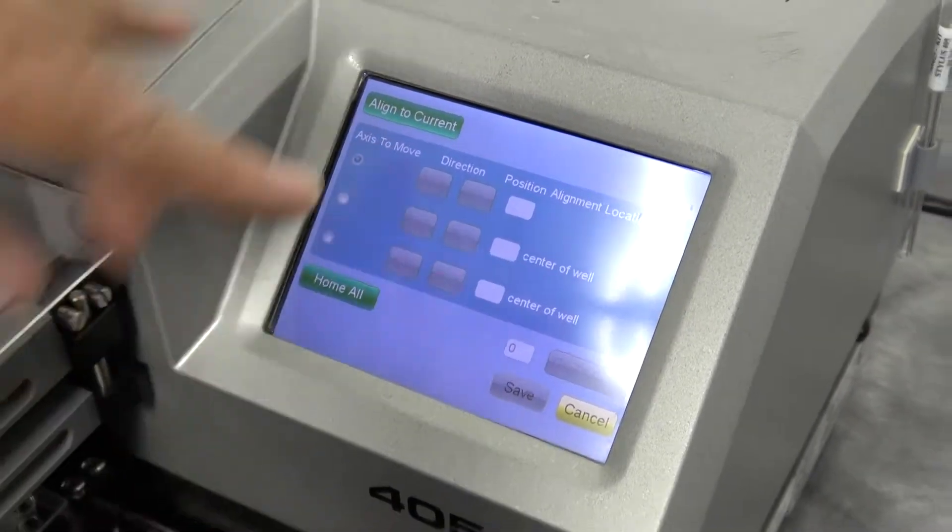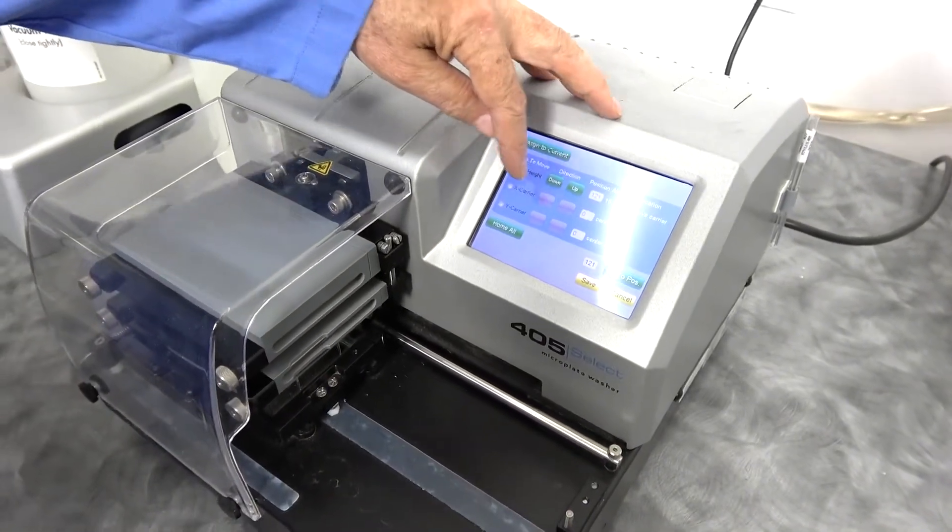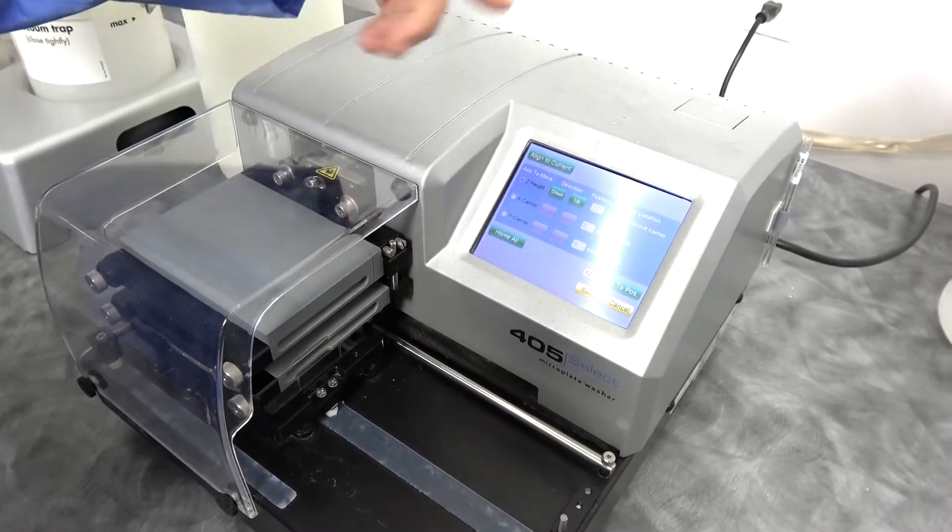So you align the current. You tell it how much you want to go over, up, down, sideways. Go to that position, and you can tell it to save.